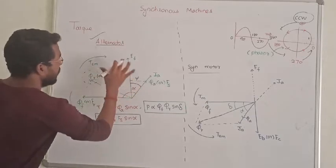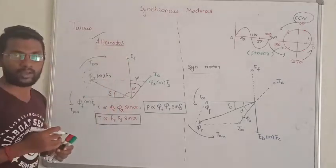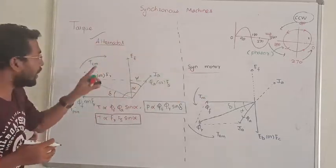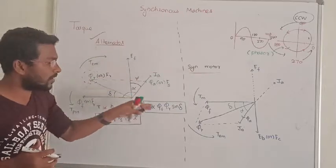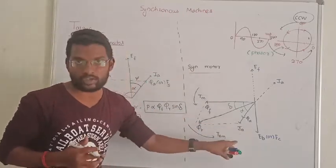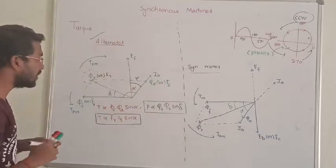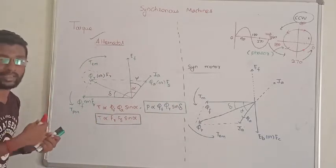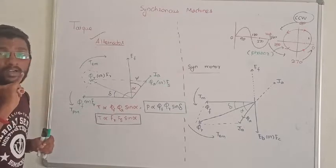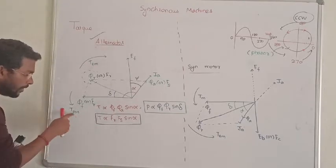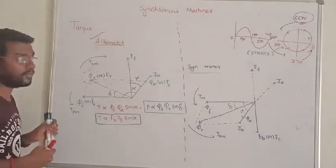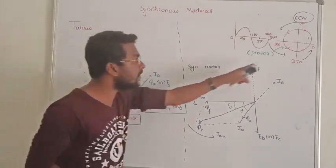That is the phasor diagram of the alternator. Now, what is the difference between an alternator and a synchronous motor? In the alternator, the current direction is one way. In the synchronous motor, the current direction is opposite. That is the difference. Usually, the torque develops earlier. In the alternator, the prime mover torque direction is followed with reference to the phasor diagram.